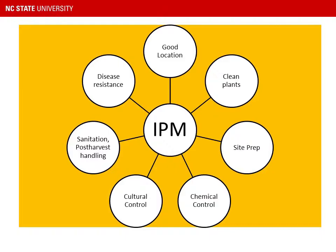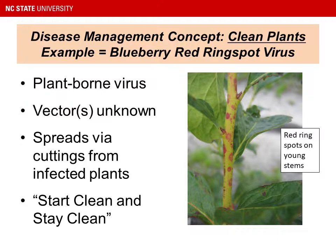One disease management concept is to start with clean plants. We'll use the example of blueberry red ring spot virus. This is a plant-borne virus; the vectors are not known, but we do know that it spreads via cuttings from infected plants. If a grower propagates softwood or hardwood cuttings from a blueberry field that has red ring spot in it, he's likely to move the disease along with the new plants and spread it to the new field. This is one easy way to avoid a problem with a virus: get a virus-indexed plant material from a certified nursery.